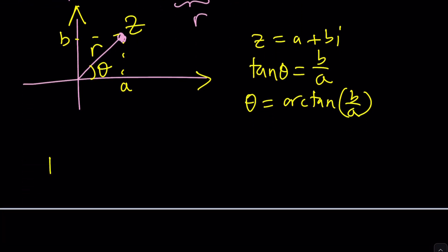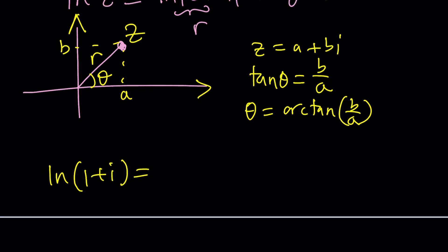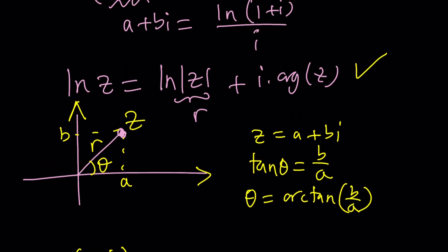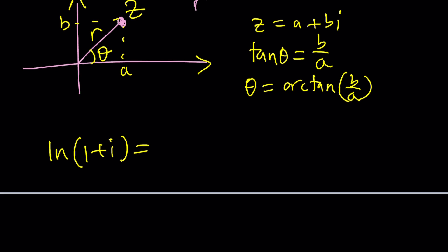How do you apply it to this scenario? Well, we can try to find ln 1 plus i from here by using the formula that I just gave you. ln absolute value of r. What is the absolute value of r? r is root 2.